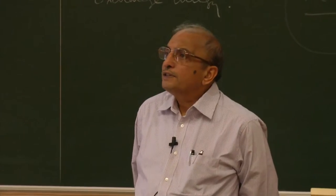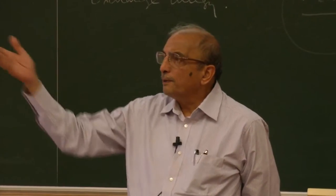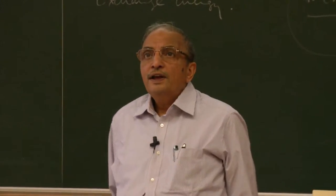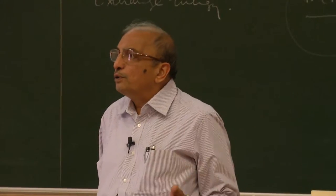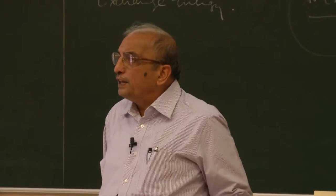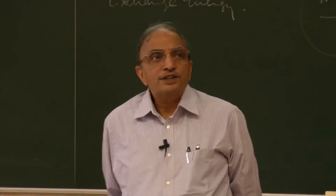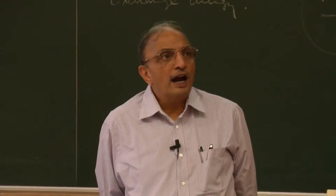Let's have a sample answer from someone here. One reason is it's a possible source of errors. What about B? Sometimes the number of iterations are not known. So how many times will you repeat the code — three times, five times, ten times? If you have to do something n times where n itself is dependent upon an input value, you cannot predict while writing the program how many times you have to repeat the code. You will have to use an iterative structure.